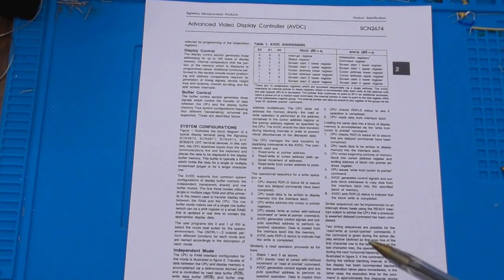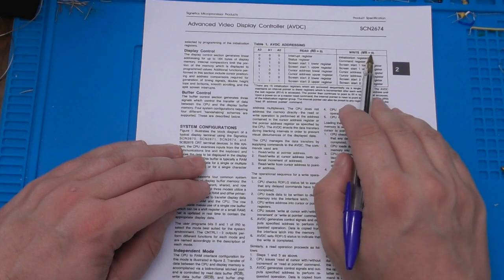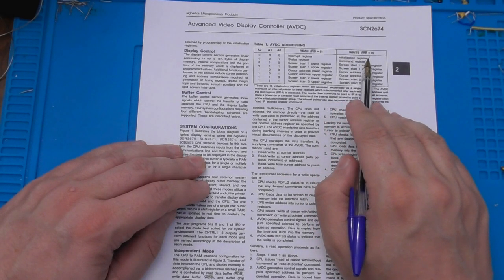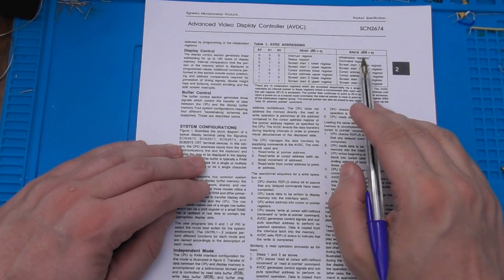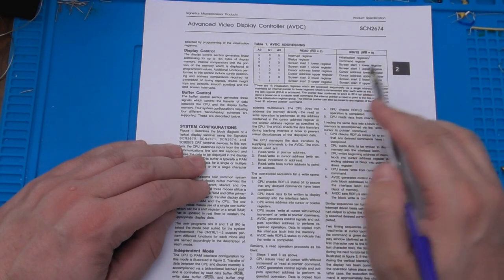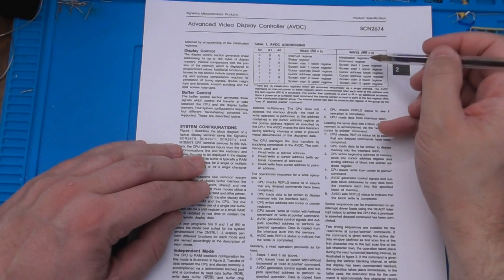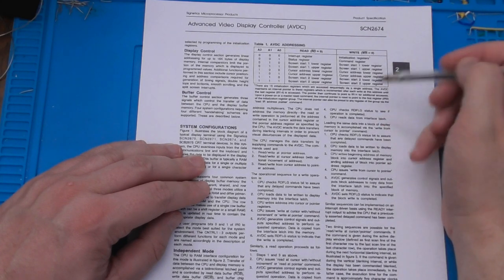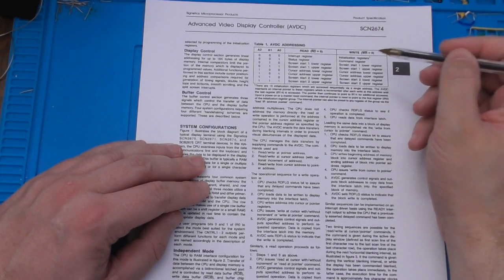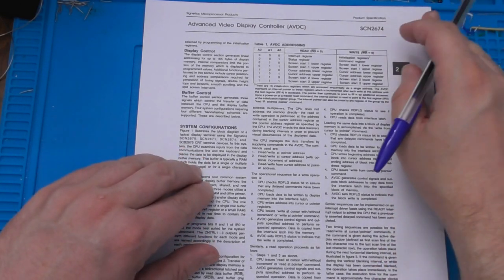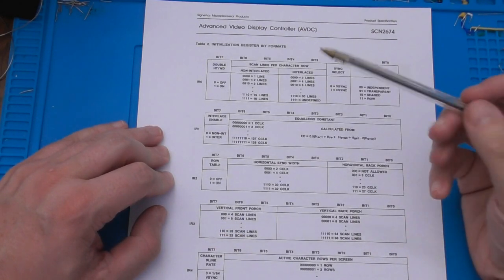Now we need to sort out how to actually write the registers. According to Table 1, if I set all three address pins low and attempt to write, it's going to write initialization registers. If I set the first two address lines low and A0 high, then write it's going to write to the command register. Those are the two things I'm going to need to get the chip up and running. The footnote says there are actually 15 initialization registers, and every time you write to one, it advances an internal pointer so the next write will go to the next register. So to initialize all of them, I just write 15 values to that same address one after another.